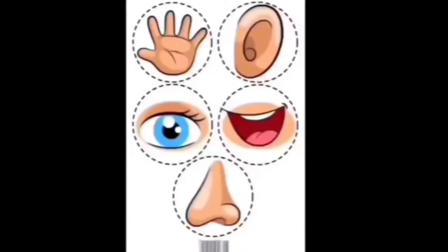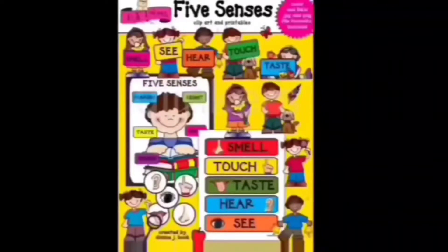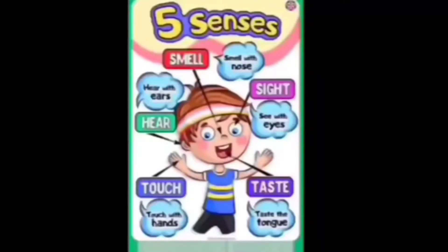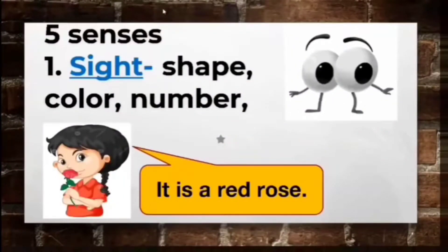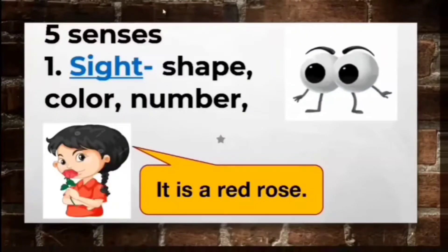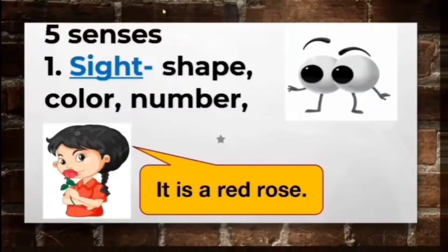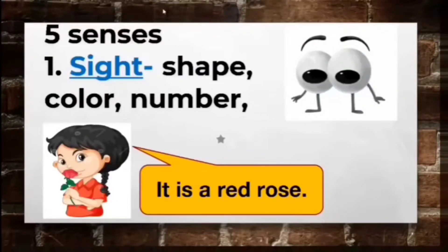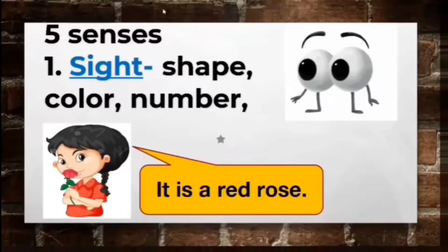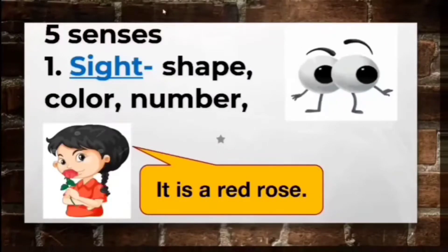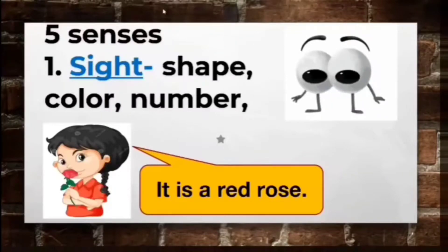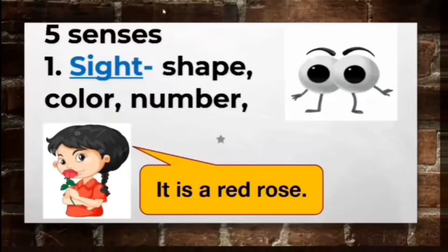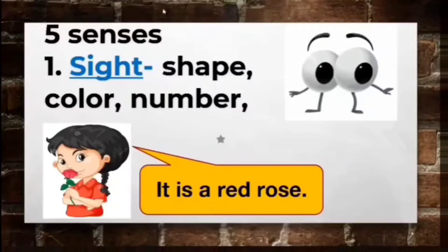You have learned about the human five senses and our sense organs during your past grade level. Our eyes are the organs responsible for the sense of sight. We use these organs to describe and to know the physical properties of an object such as color, size, shape, number, and measurement. In the picture, the girl is holding a flower and she describes the flower using her eyes. She says, it is a red rose. In your notebook, write at least two sentences that use your sense of sight.